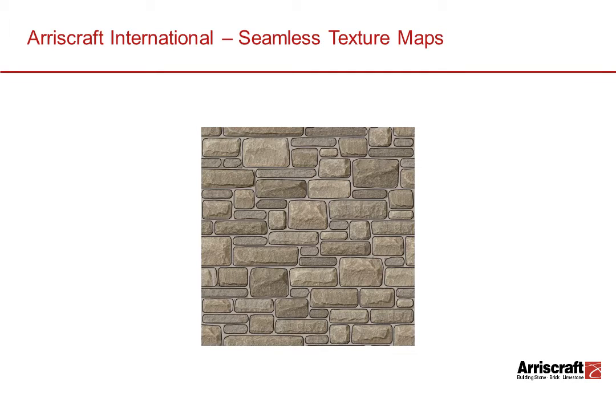Taking this process a step further, texture maps add the element of color that can be used in model renders instead of 2D elevations. Instead of simply showing the bond pattern with lines, texture maps show both the bond pattern and color of the product to give a much more accurate depiction of the stone.